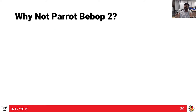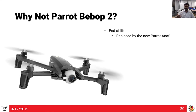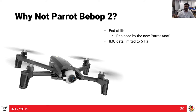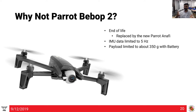Now, why NOT use a Parrot Bebop 2? It's end of life and only available refurbished. The IMU data is limited to 5 Hz, so you cannot do visual-inertial odometry with just the monocular camera — you must add a separate IMU. The payload is limited to about 350g with battery, leaving only 50–70g usable. And you cannot change the inner loop attitude controller from PID to something like MPC, LQR, or LQG — you can only retune the PID gains.